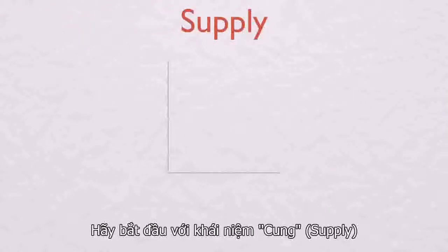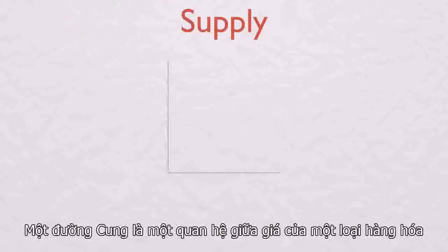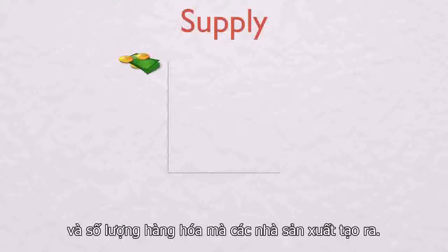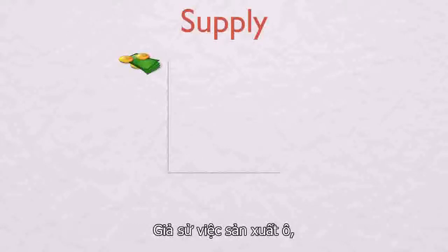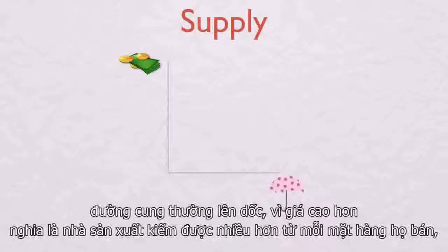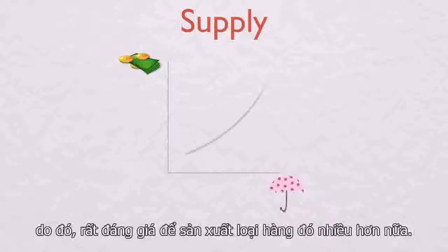Let's start with supply. A supply curve is a relationship between the price of a certain good and the amount of that good producers make. Let's say they're producing umbrellas. Supply curves typically slope upwards, since a higher price means producers can earn more from each item they sell, so it's worth it for them to produce more of that item.